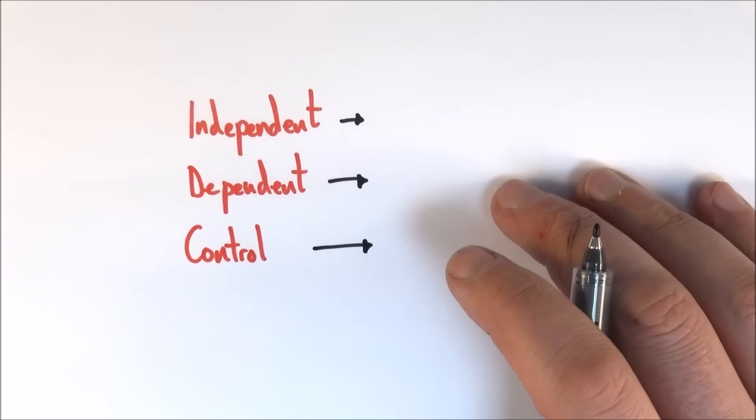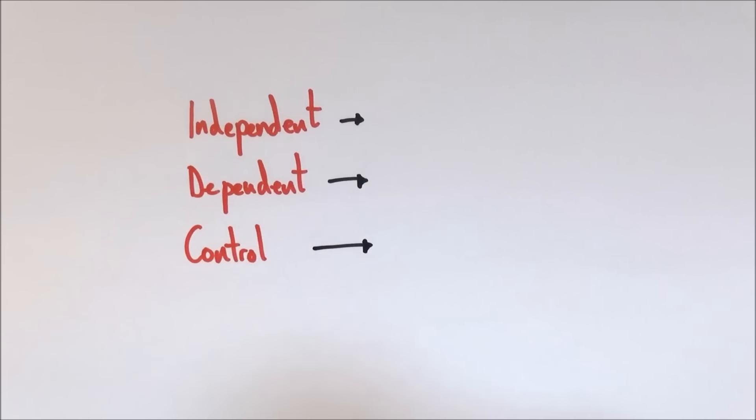Now hopefully this is just a bit of revision from GCSE, but there are three types of variable that we have in an experiment.